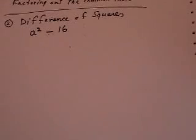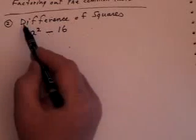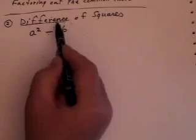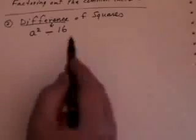Okay, the next type of factoring we look at is called a difference of squares. Now, difference means that you are subtracting. So it only works if you have a subtracting sign here.